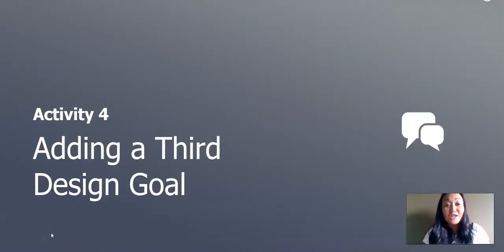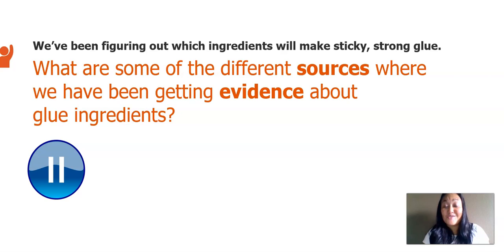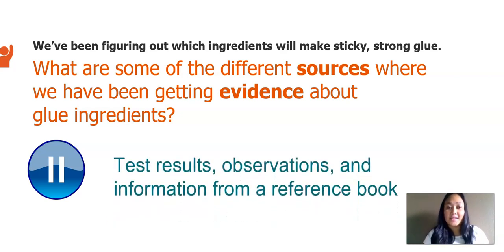In this last activity of our lesson, we will add a third design goal. We've been figuring out which ingredients will make sticky, strong glue. What are some of the different sources where we have been getting evidence about glue ingredients? I know that we've been using test results, observation, and information from a reference book.